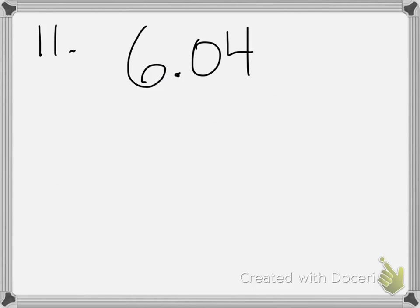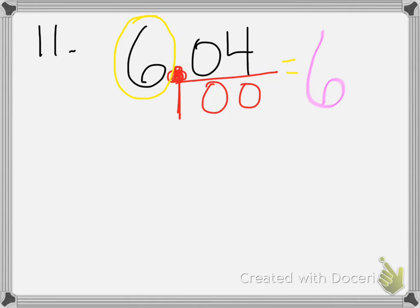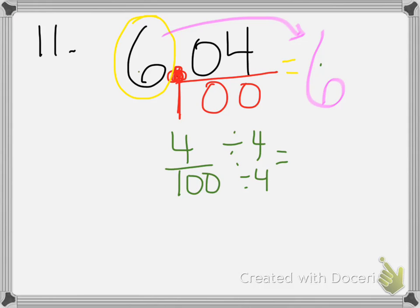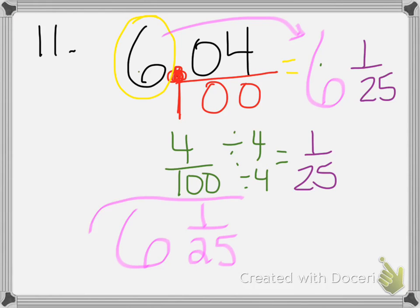For number 11, same directions: write each decimal as a fraction or mixed number in simplest form. Using the lollipop method, the decimal stick gives zeros under digits to the right. There's a 6 before the decimal, so this will be a mixed number: 6 and something. Now just deal with 4/100 — divide both by 4 to get 1/25. So the answer is 6 and 1/25. Many of you just gave 1/25 — you must include the whole number in your mixed number.